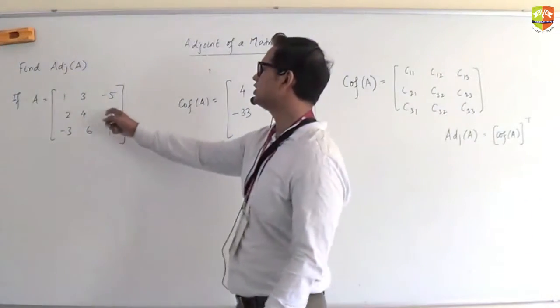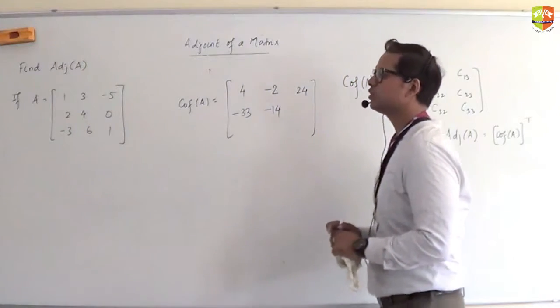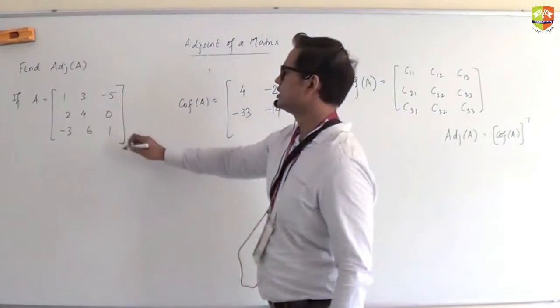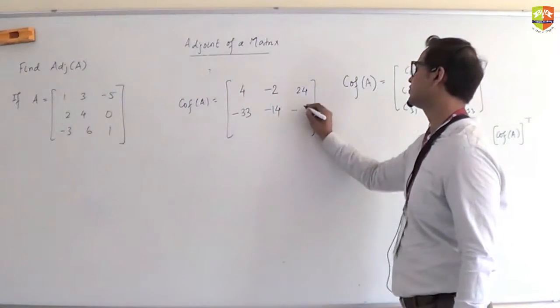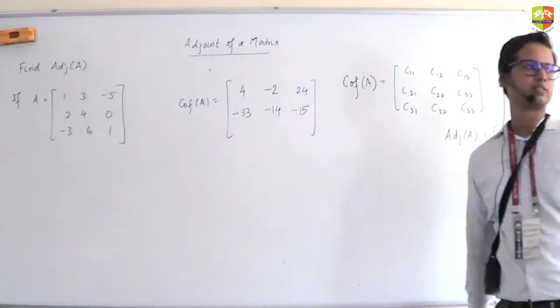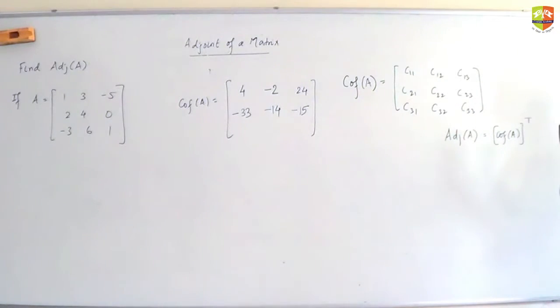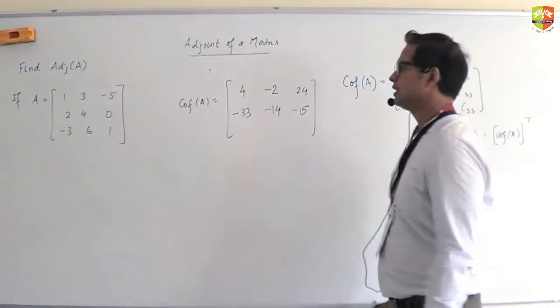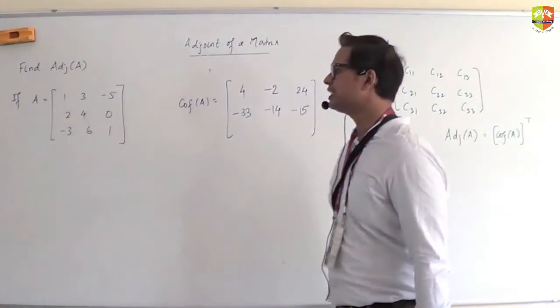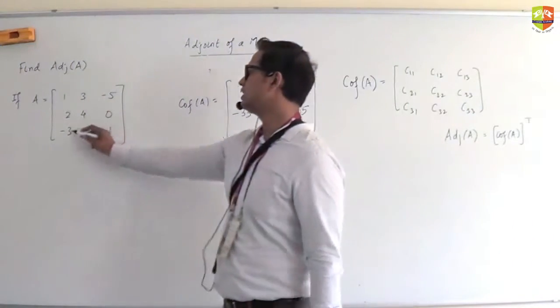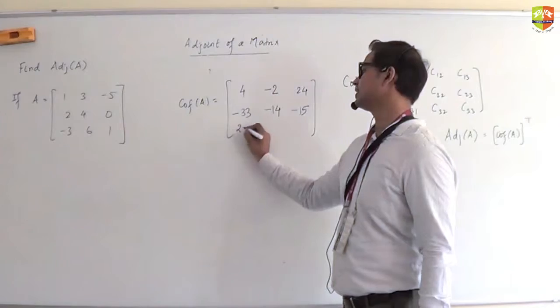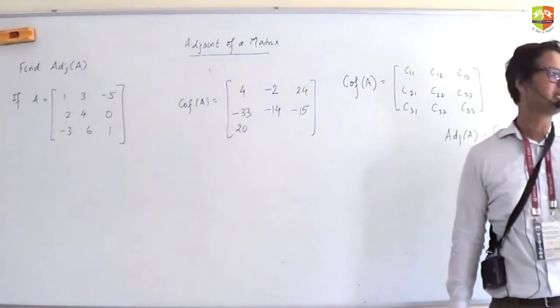For 0, 0 comes in the second row, third column. So you will have a minus sign. Hide the column, hide the row. You see 1, 3, -3, 6. So 6 plus 9, which is 15, but with minus sign that's -15.